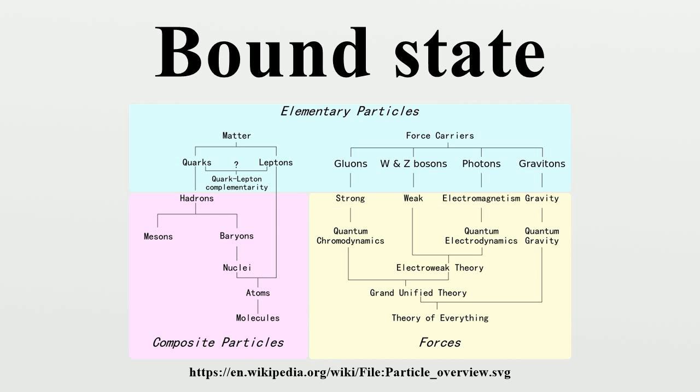In Hubbard model, two repulsive bosonic atoms can form a bound pair in an optical lattice. The JCH Hamiltonian also supports two polariton bound states when the photon-atom interaction is sufficiently strong. In particular, the two polaritons associated with the bound states exhibit a strong correlation such that they stay close to each other in position space. The results discussed have been published.